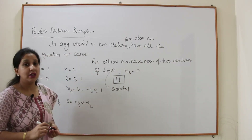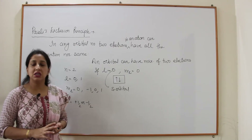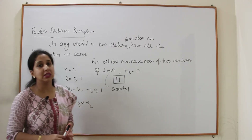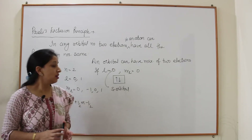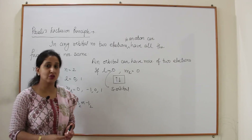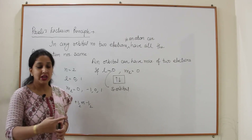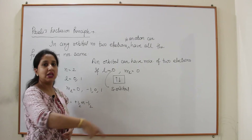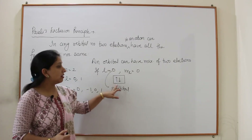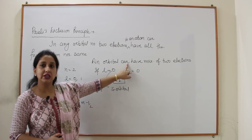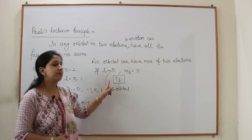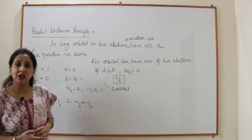Two electrons in the same orbital cannot have the same spin — if they did there would be no stability. One is clockwise and one is anti-clockwise. So in the S orbital, the maximum electrons are two, and those two electrons always have opposite spins.